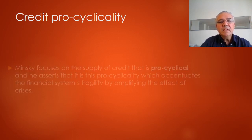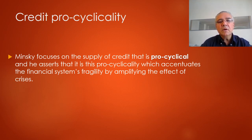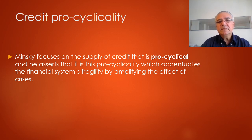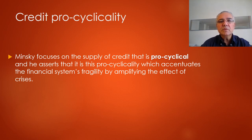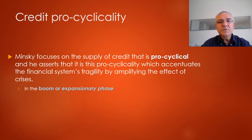Hyman Minsky focuses on the supply of credit and in particular on the pro-cyclicality of that supply. This means that in periods of boom, credit is supplied in great quantities — credit moves with the boom — and in recessions, a time of austerity, banks become overly conservative. This pro-cyclicality tends to amplify the effects of the boom and the effects of recessions or depressions.